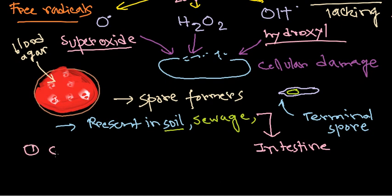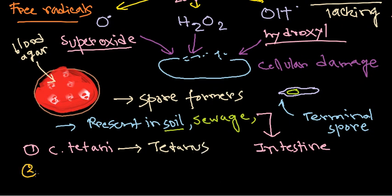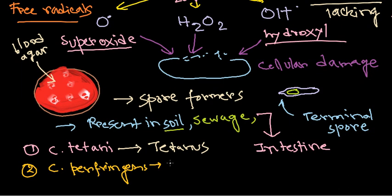There are several clinically significant Clostridium species. First is Clostridium tetani, which causes tetanus — a shock condition caused by the tetanus toxin. Second is Clostridium perfringens, a very common cause of foodborne infections and also capable of causing gas gangrene.